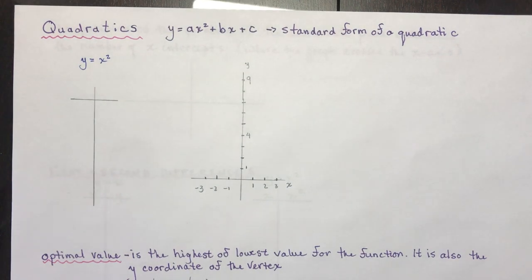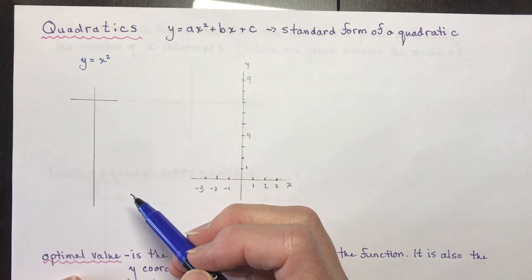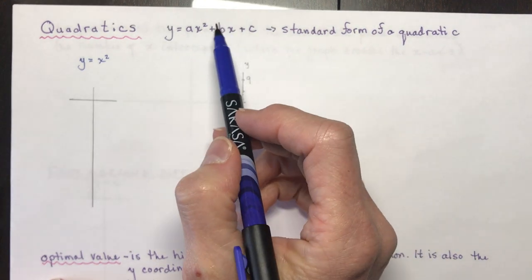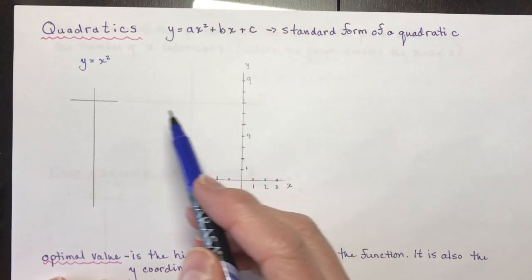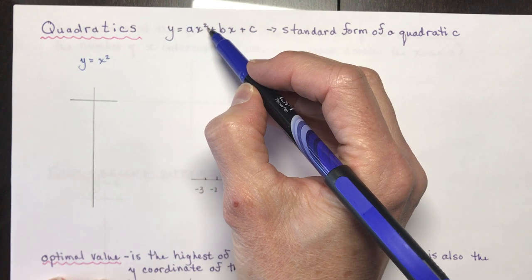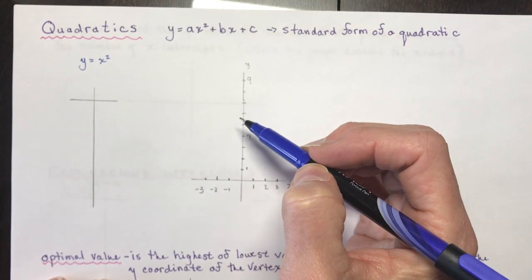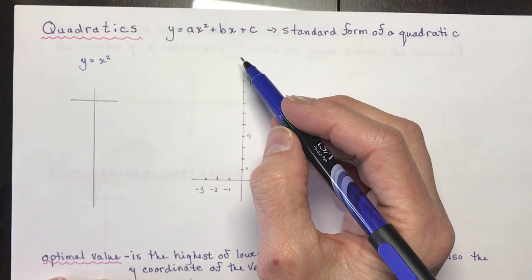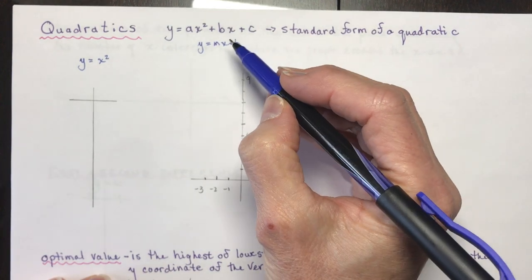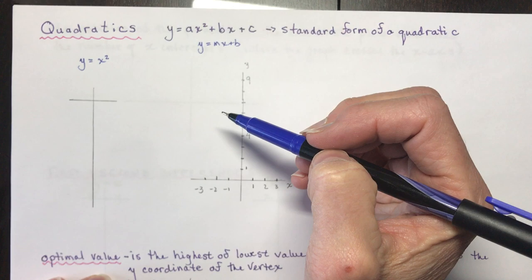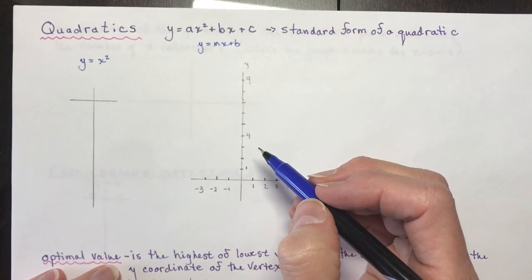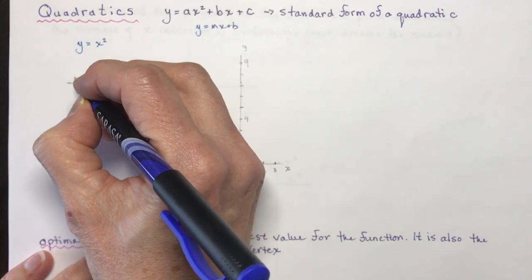In grade 12 you'll talk about parent functions. Y equals x squared is the parent function for a quadratic — the smallest form of a quadratic, missing all the bx plus c terms. You should also know that a quadratic has a degree of 2. Linear functions from grade 9, like y equals mx plus b, had degree 1. Degree 3 is cubic, degree 4 is quartic, and so on.